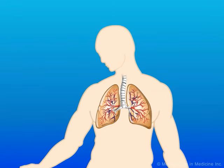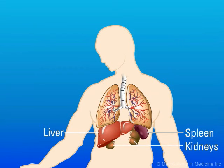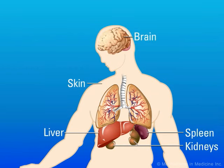Subsequently, with vascular invasion, the infection disseminates to the liver, spleen, kidney, skin, and brain. This form of disease has an extremely high morbidity and mortality and requires aggressive surgical and medical therapy.